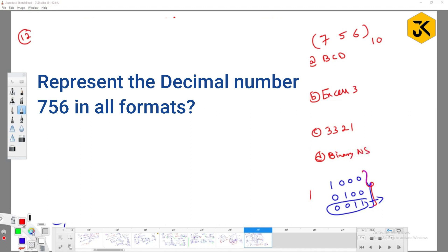So tell me, what is the answer for BCD of 756? So for 7, what is the value? So each and every digit requires 4 bits. Very good.